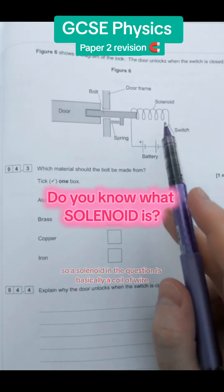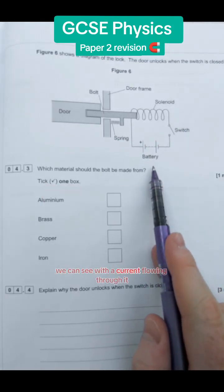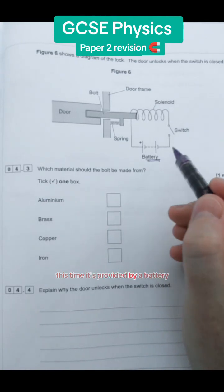A solenoid in the question is basically a coil of wire, as we can see, with a current flowing through it. This time it's provided by a battery.